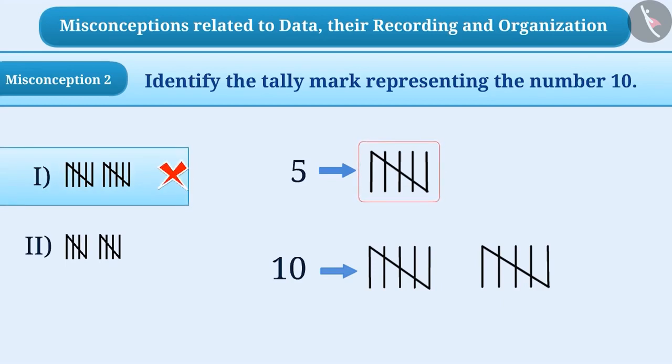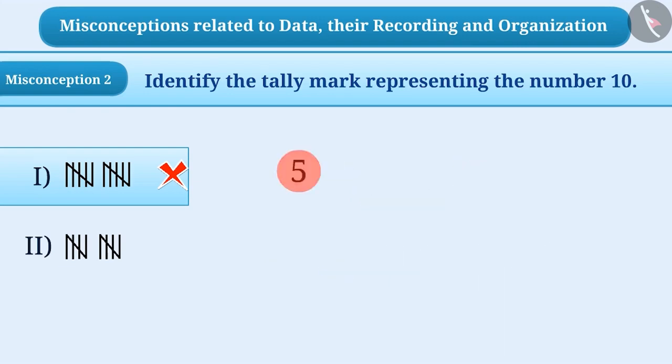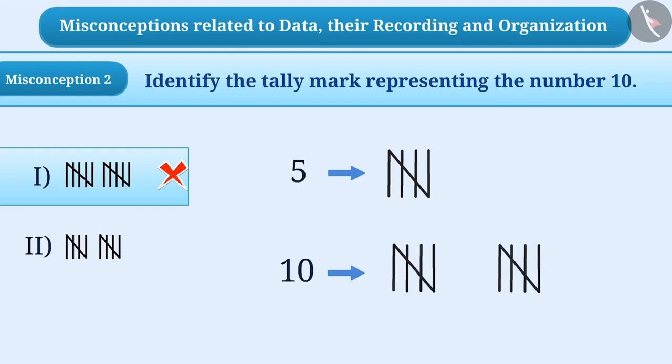Remember that it is wrong to draw five vertical lines and a slanting line when showing the tally marks. The correct understanding is that a slanting line is drawn on four straight lines to represent the number 5.